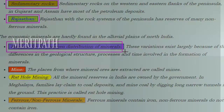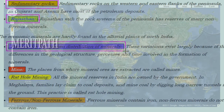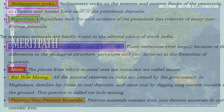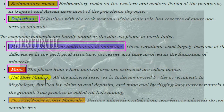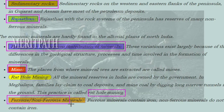These variations in mineral distribution exist largely because of the differences in geological structure, processes, and time involved in the formation of minerals. Places from where mineral ores are extracted are called mines. In Meghalaya, families lay claim to coal deposits and mine coal by digging long narrow tunnels in the ground — this practice is called rat hole mining.